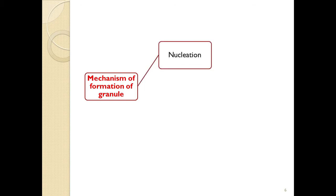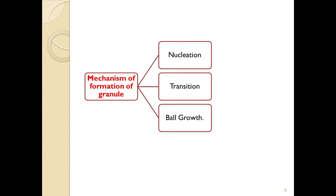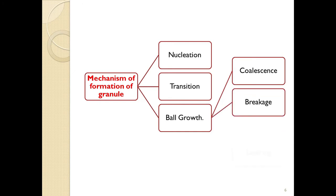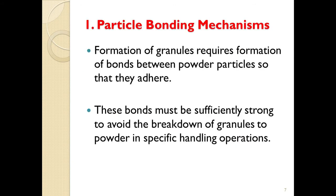Mechanism of granule formation is divided into three phases. First is the nucleation phase, second is the transition phase, and the last is ball growth — the development of uniform-shaped granules. Ball growth occurs by four mechanisms: collision formation, breakage, layering, and abrasion transfer.